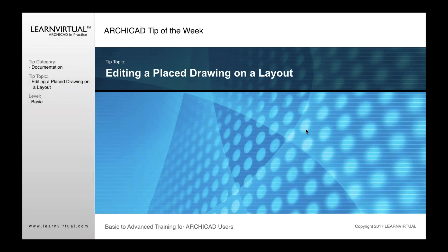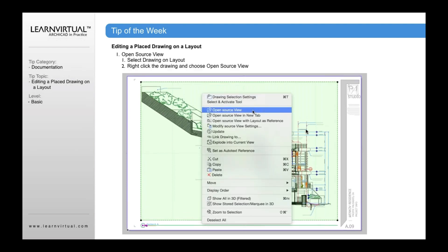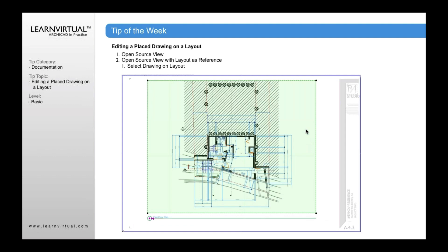Our tip of the week is going to be editing a placed drawing on a layout. If you've not done this before, once you've placed a drawing onto a layout, you can click and select that view at any point in time. Once it's highlighted, if you right-click on that, using the context menu, we can open that source view. That will then open that source view into the model view setting so we can edit it.